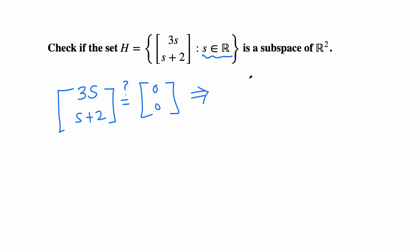That implies 3s must be 0, and at the same time s+2 must be 0 as well. For the same value of s, we have to have these two things true.